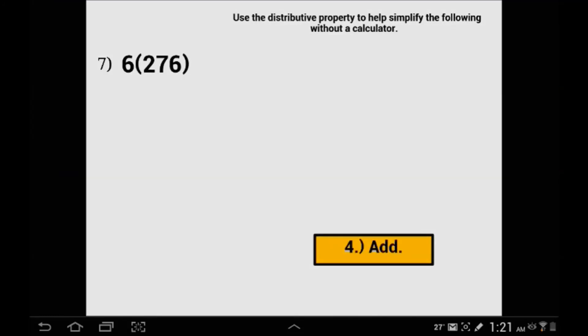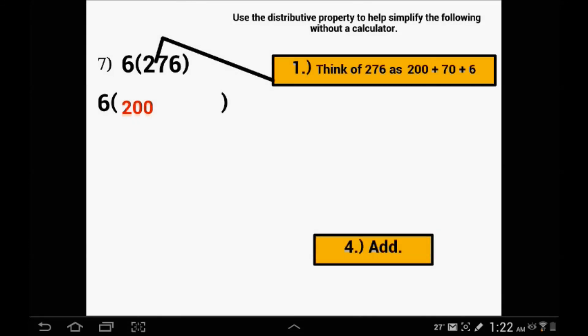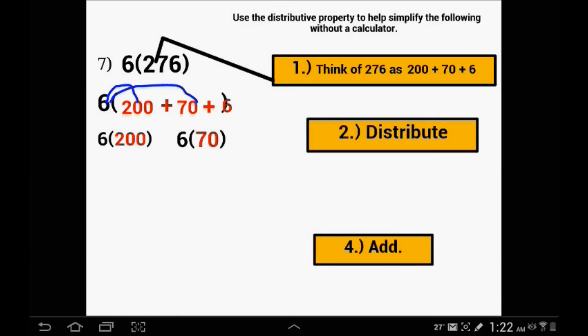In our last example we are going to take a three-digit number. 6 times 276. We are going to break it down by place value: 200, 70, and 6. I am going to rewrite it as the sum of three numbers: 200 plus 70 plus 6. We are going to distribute the 6 into everything: 6 times 200, 6 times 70, and 6 times 6.